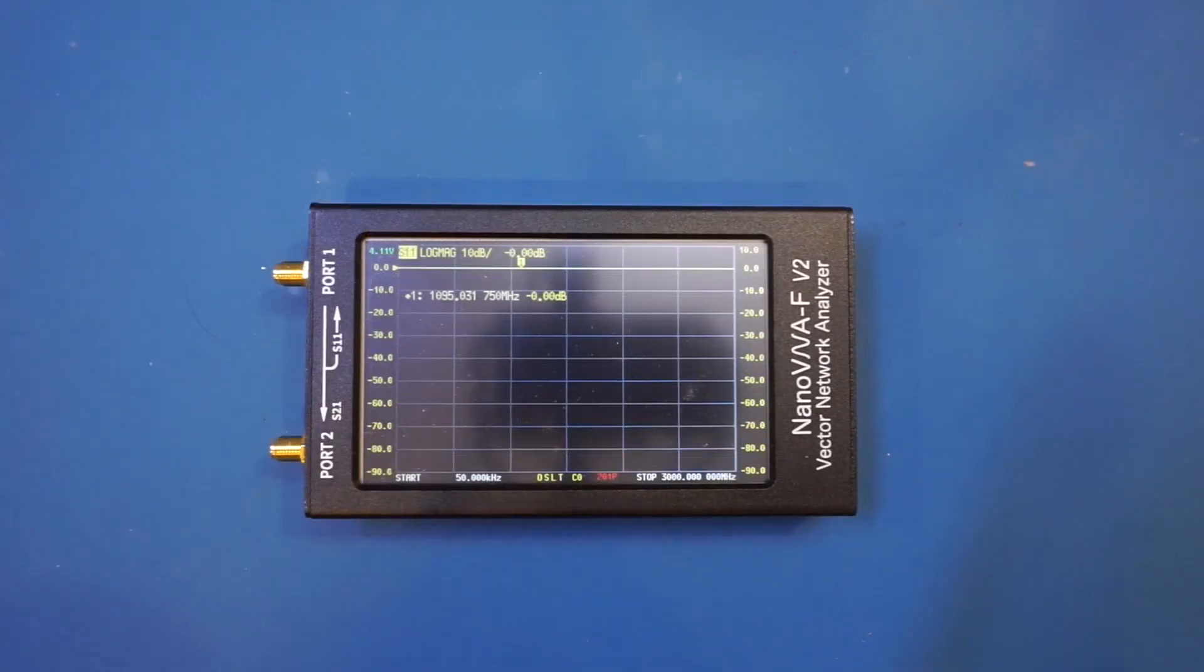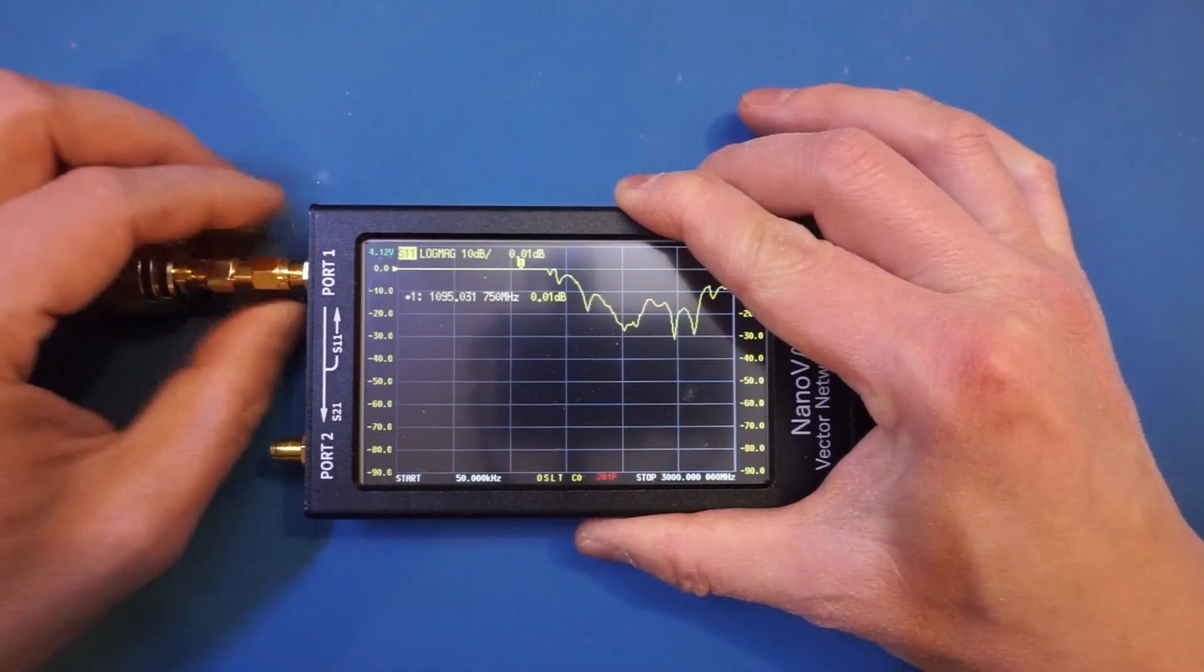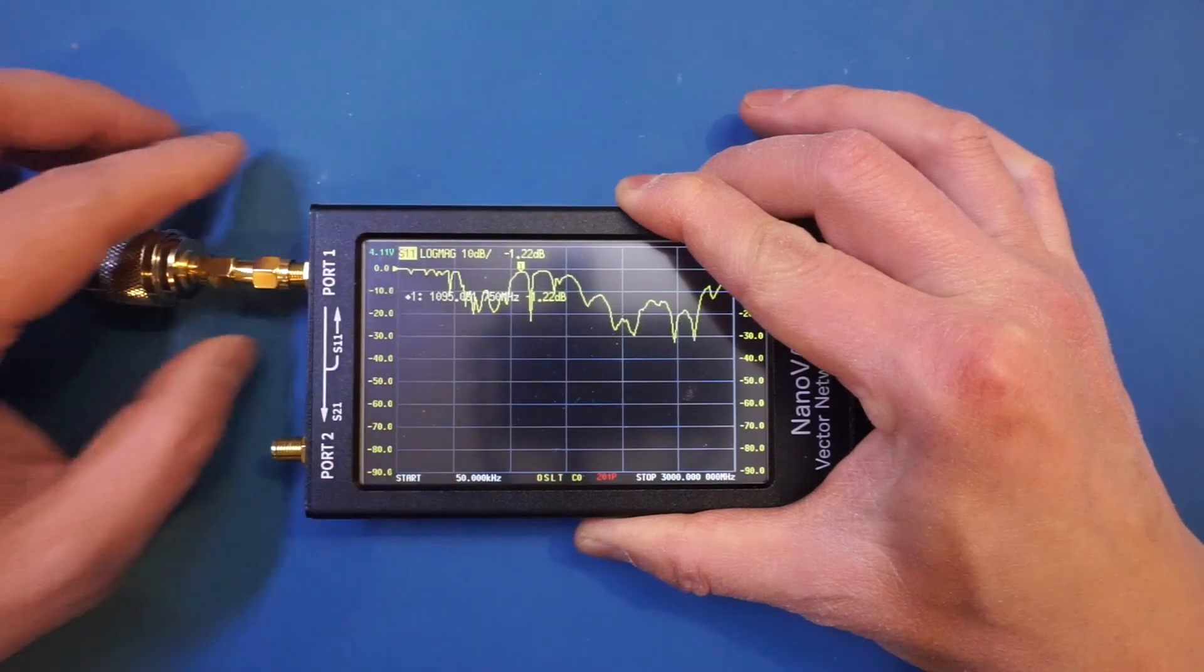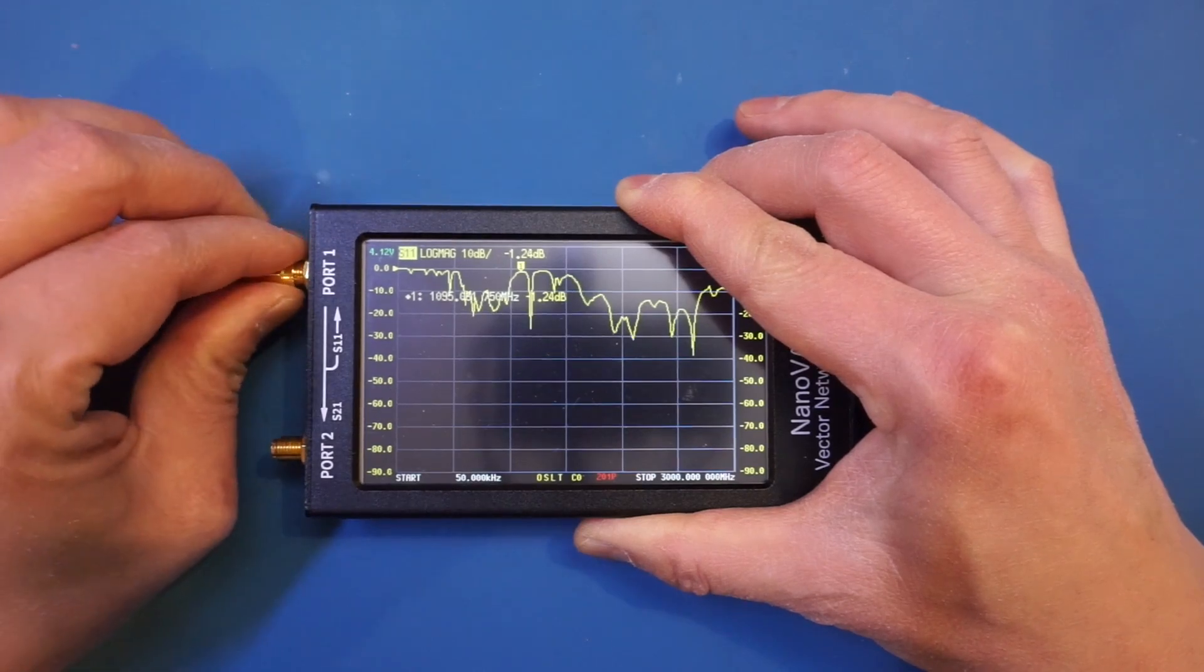So now let's hook up one of the antennas and take a look at the measurement here. For that I'm using this adapter as the antenna has an N connector whereas the NanoVNA has an SMA connector here. So let's connect here.